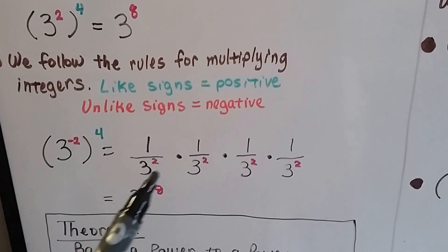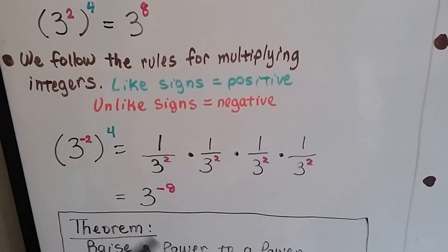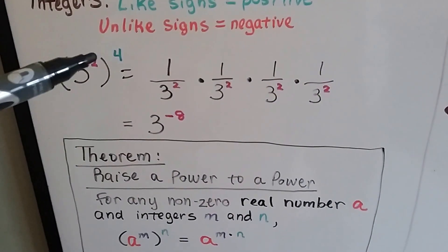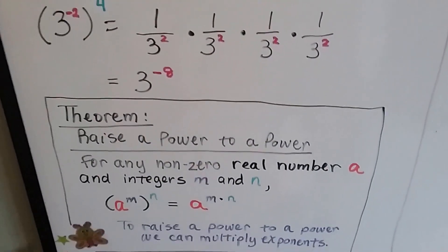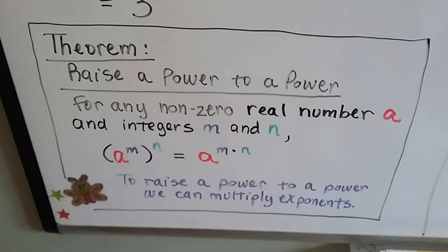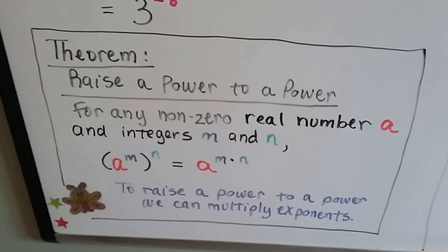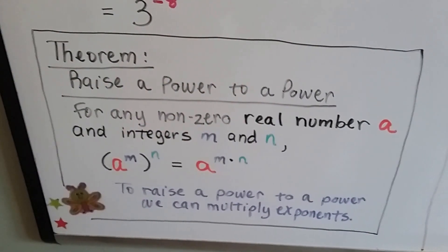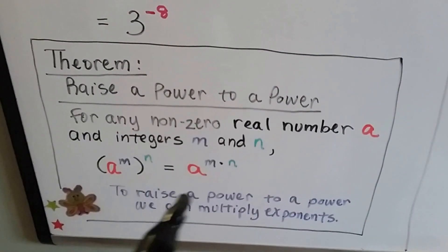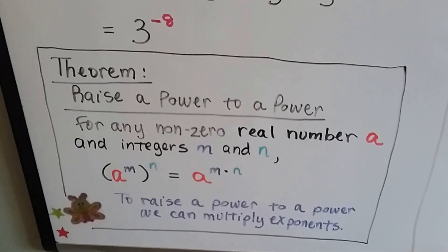When we multiply bases, we add the exponent. When we're raising a power to a power, we multiply them. So here's our theorem for our first one. When we raise a power to a power for any non-zero real number a, and integers m and n, we multiply the exponents — m times n. To raise a power to a power, we can multiply exponents.